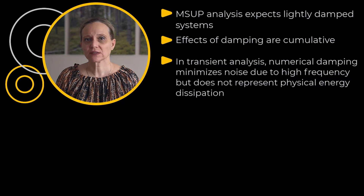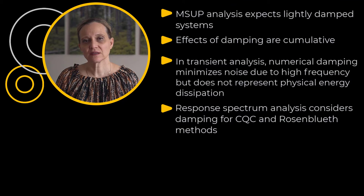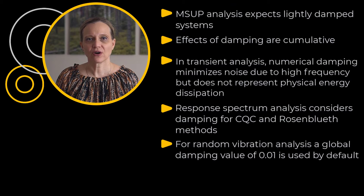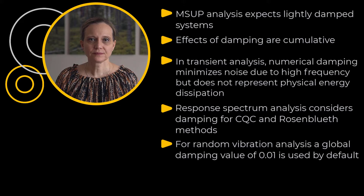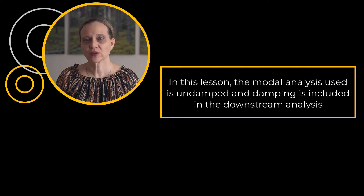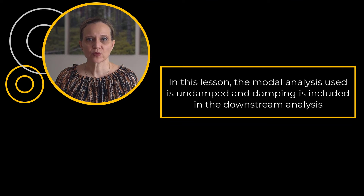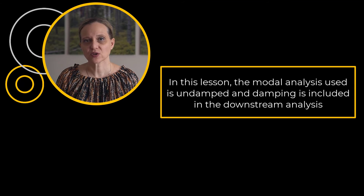The numerical damping parameter usually does not need to be changed and can be kept at its default value. Response spectrum analysis only incorporates damping for the CQC and Rosenblatt mode combination methods. For random vibration analysis, a global damping ratio of 0.01 is used by default if no damping is specified. Note that the discussion in this lesson is related to using modes from an undamped modal analysis, where damping is included in the downstream mode superposition analysis. There is a damped modal analysis solver available in Mechanical that supports additional functionality, but its discussion is outside the scope of this lesson.